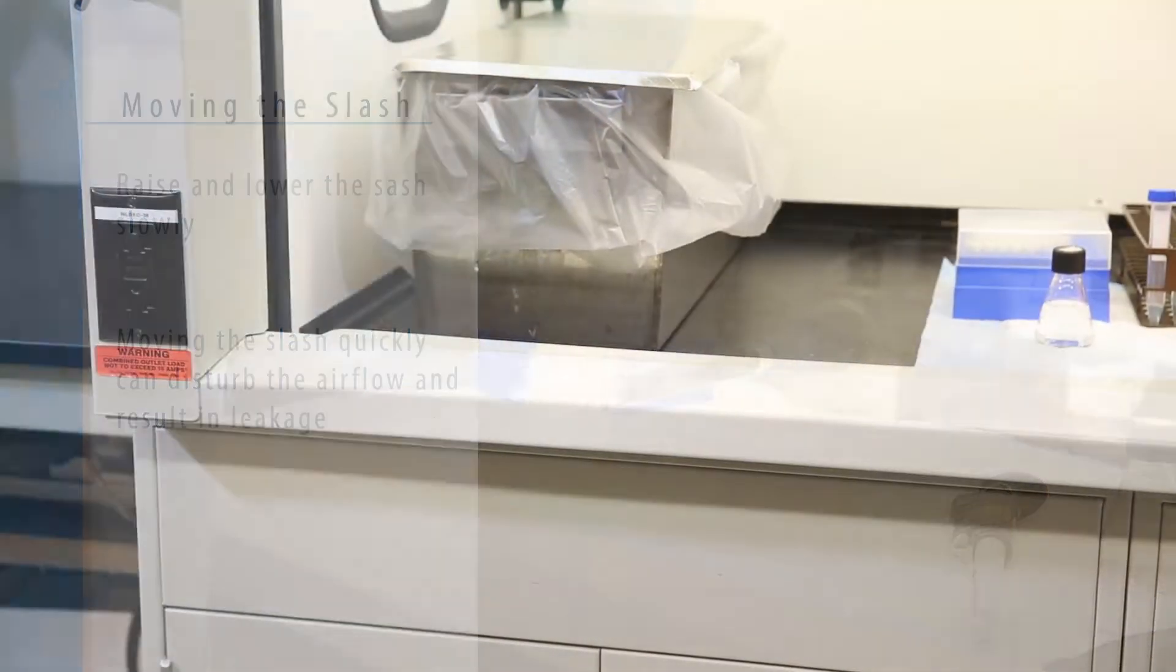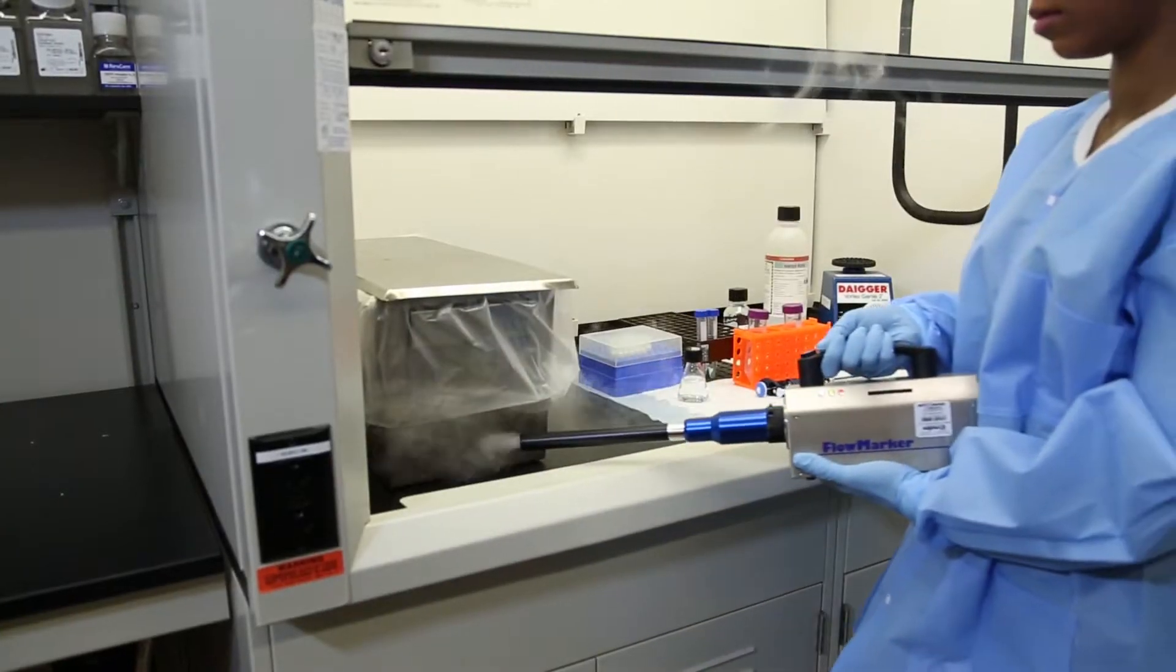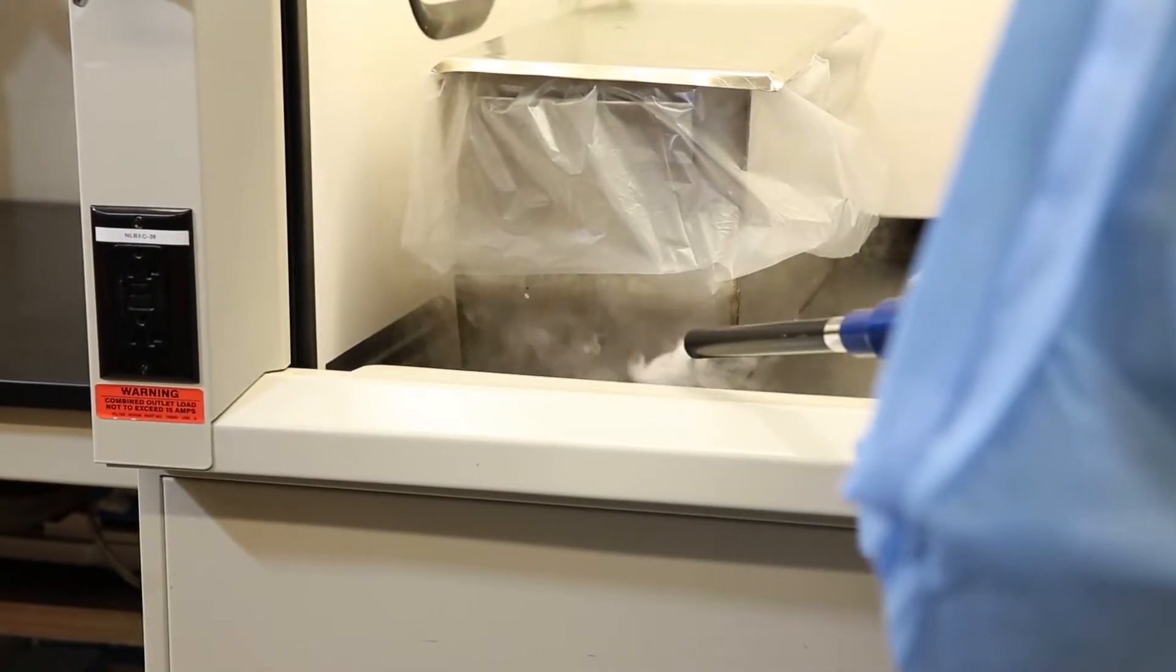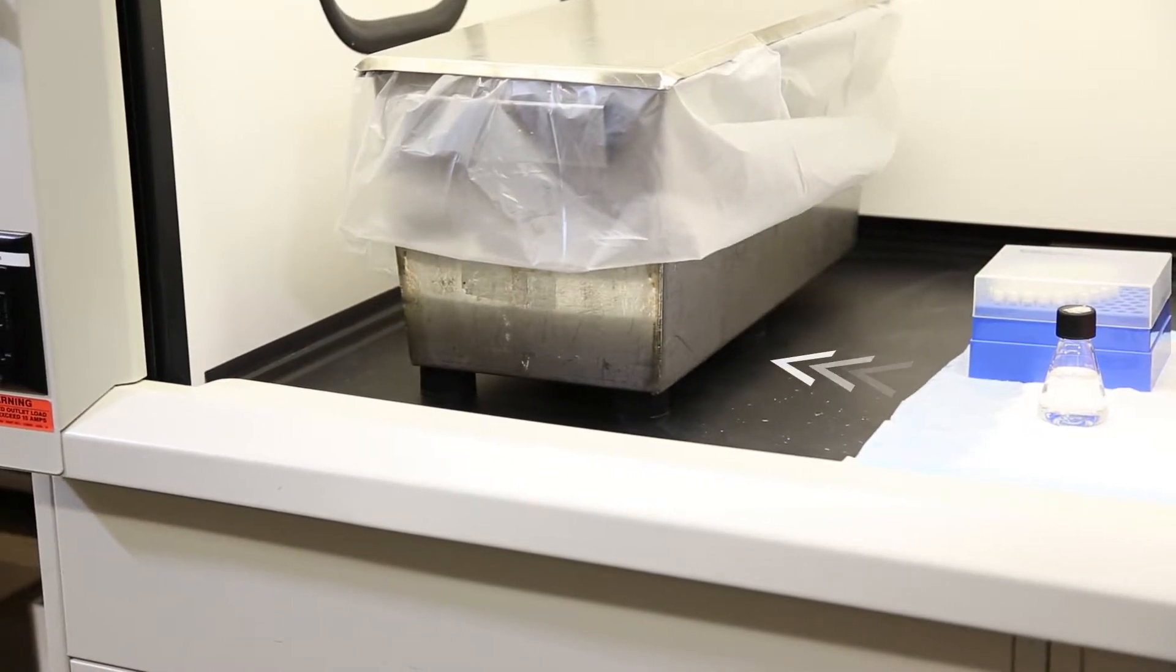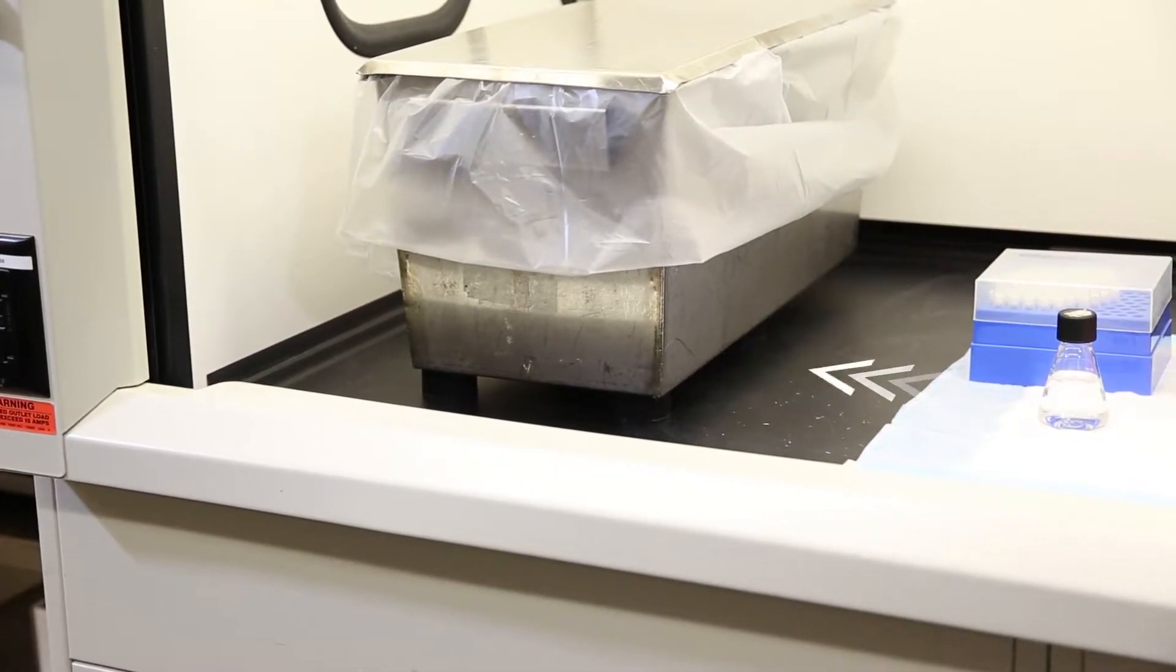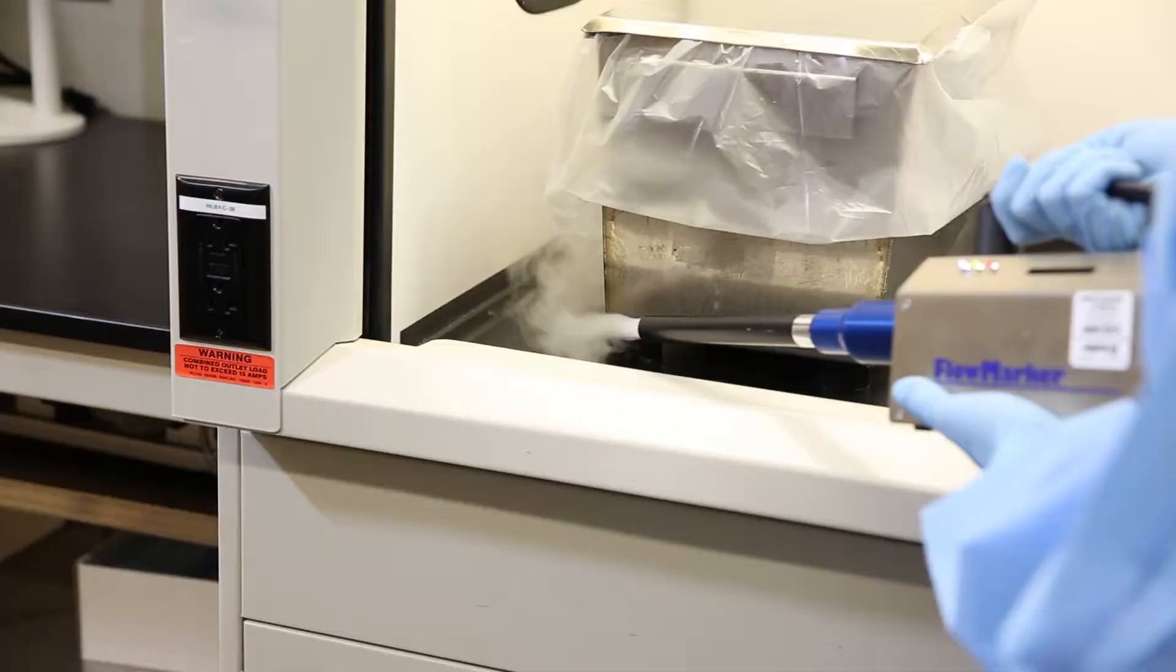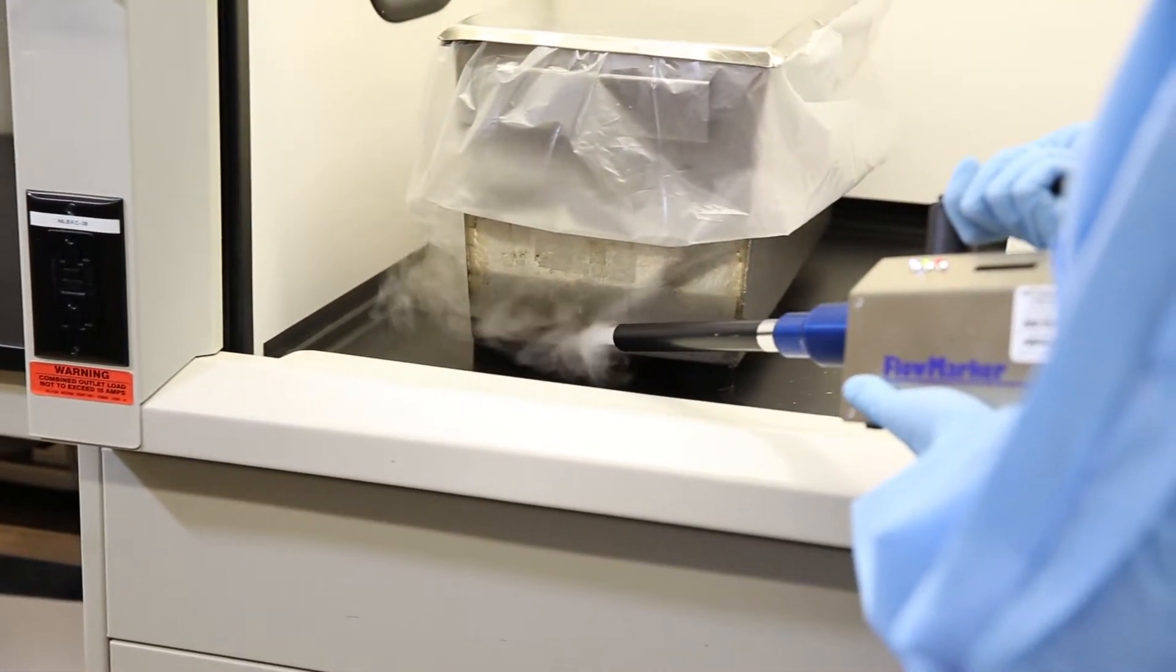Large equipment inside the hood can obstruct the airflow and may allow vapors to escape into the lab. Equipment should be elevated to allow air to flow under it so the proper fume hood airflow patterns will be maintained.